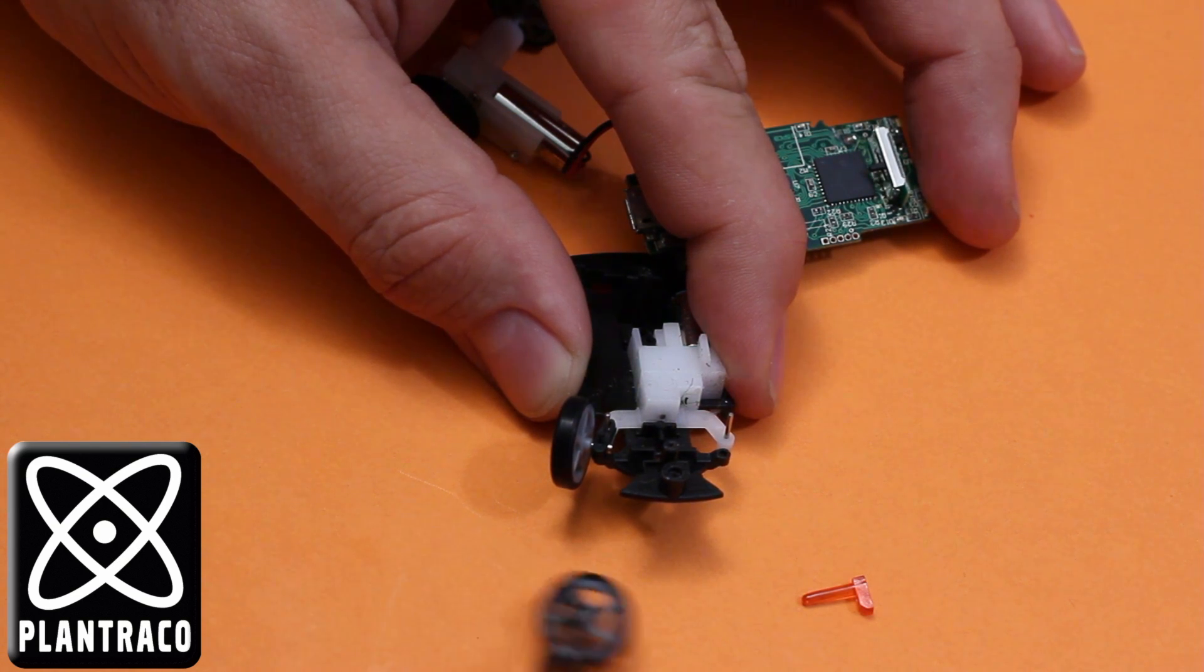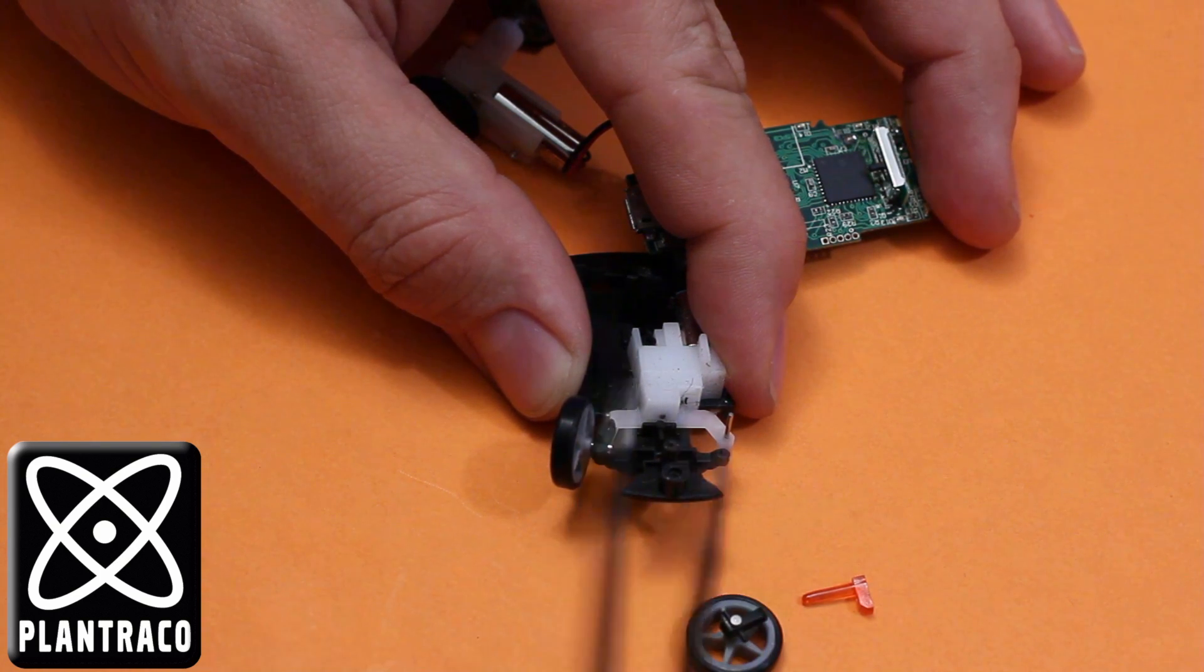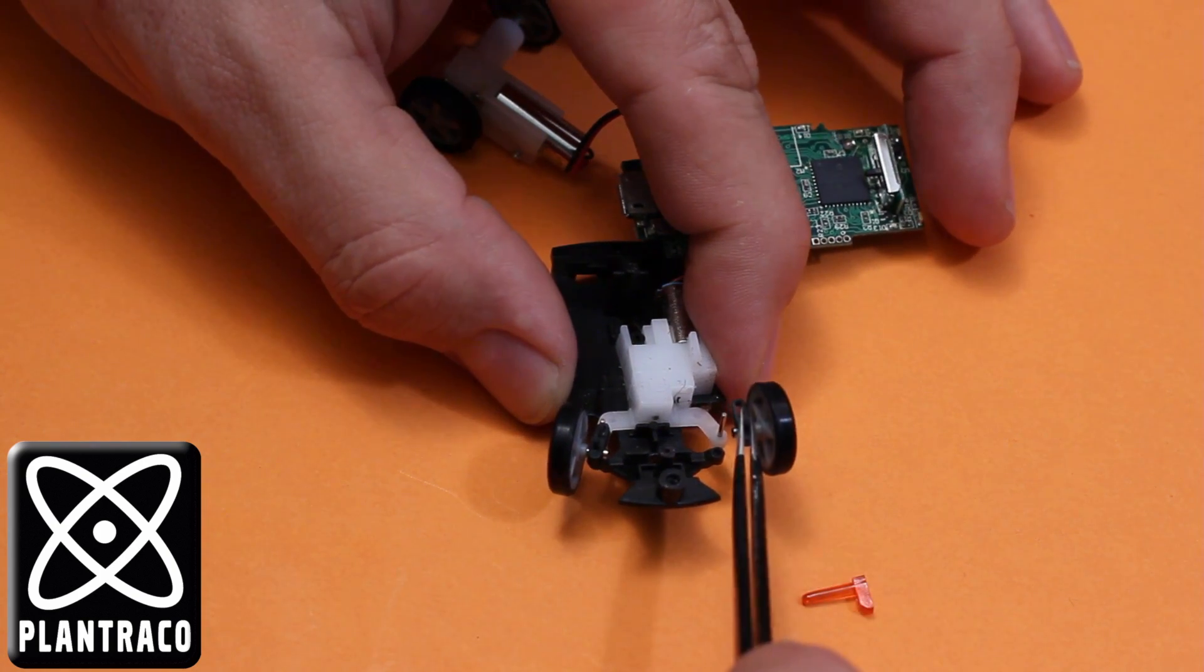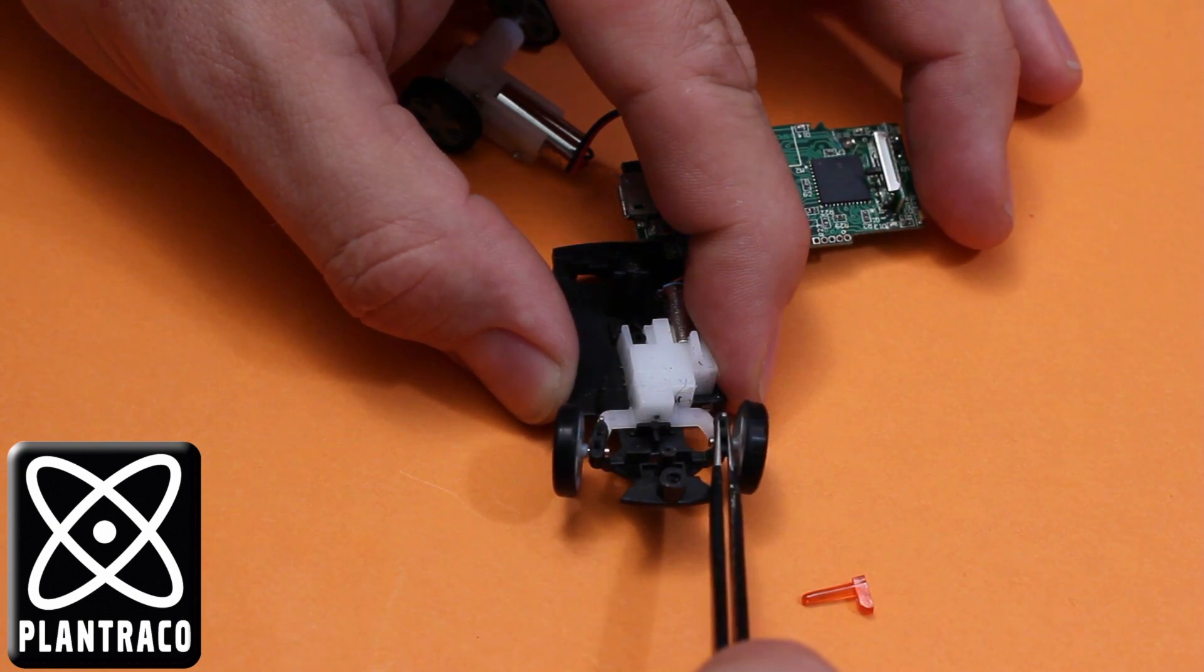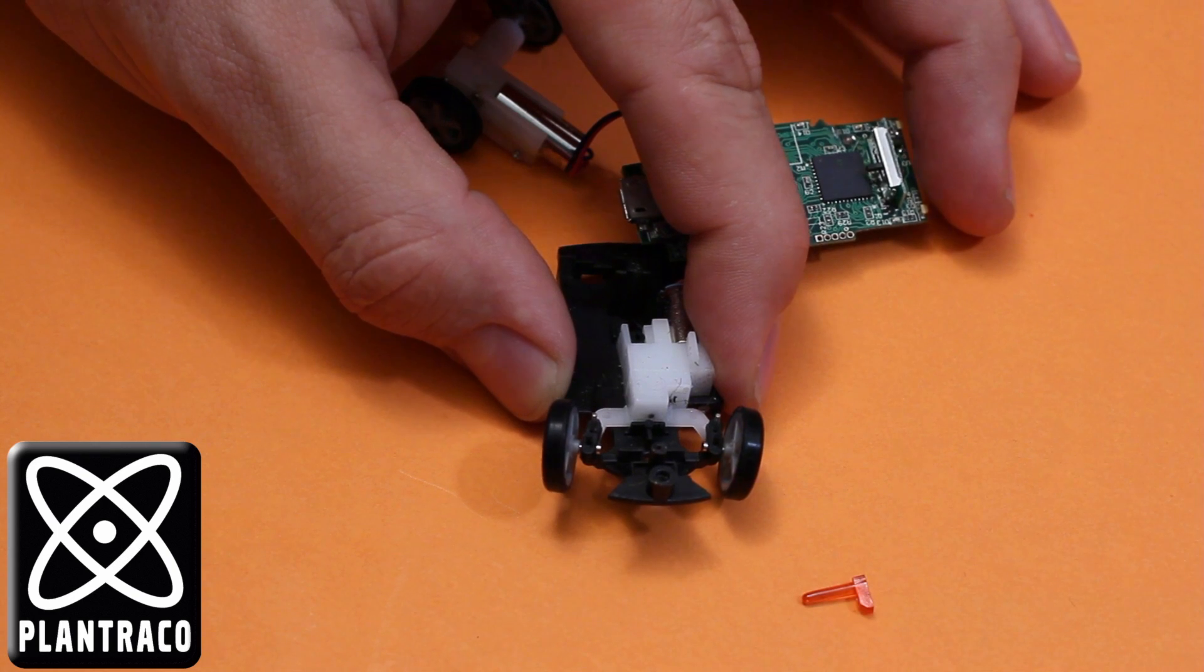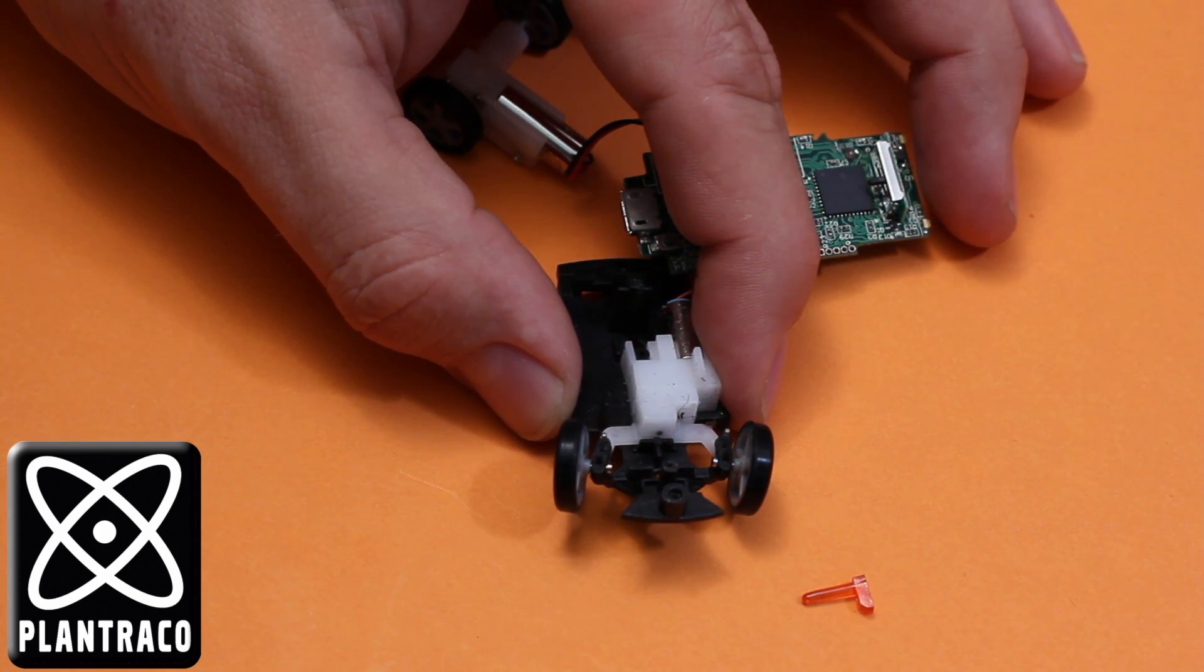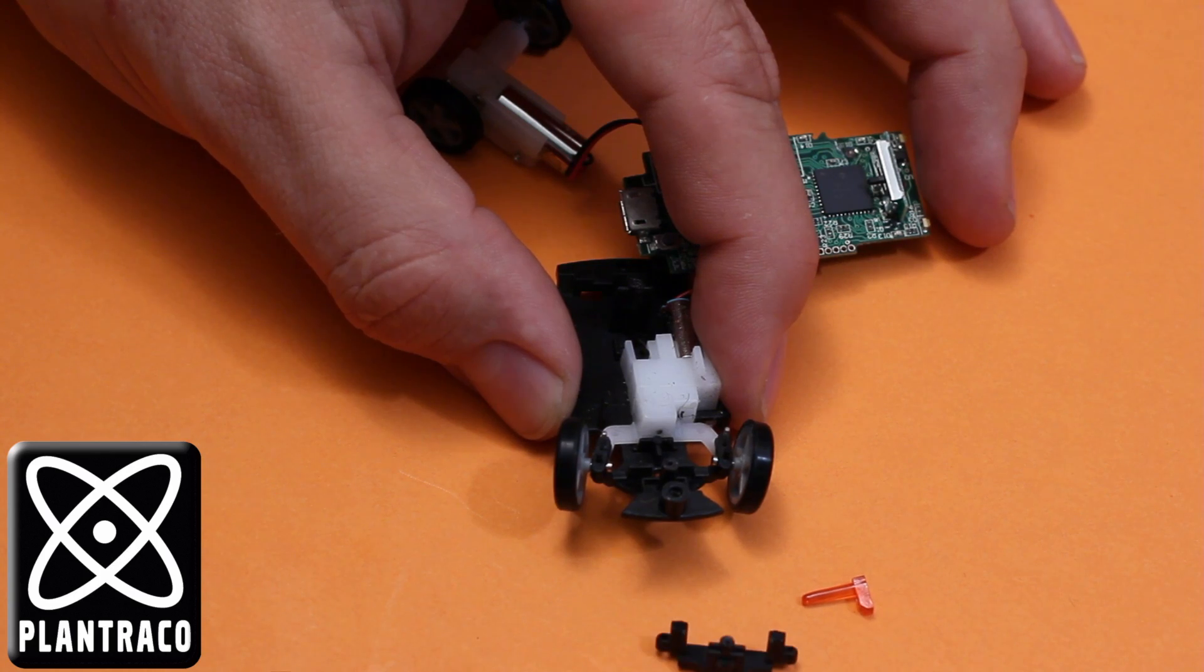And now this wheel has the notch facing the other way. Again, just slide the slot over the steel pin. The steering pin goes in the hole there. And then you're ready for this part.